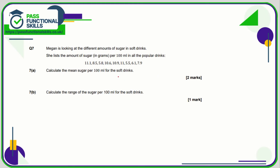Question seven is a calculator question. We add up all of these values and divide by nine. The total grams of sugar comes to 77.4 grams, and dividing by nine gives a mean value of 8.6 grams of sugar per 100 millilitres. The range is the greatest value take away the lowest: 11.1 take away 5.5 is 5.6.